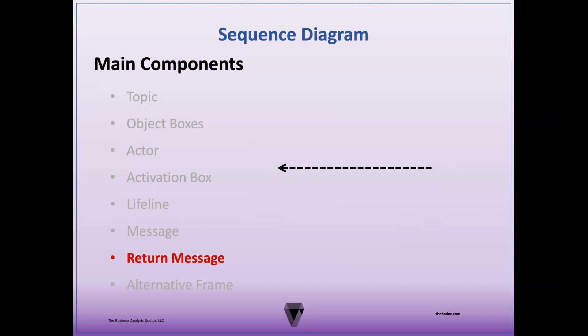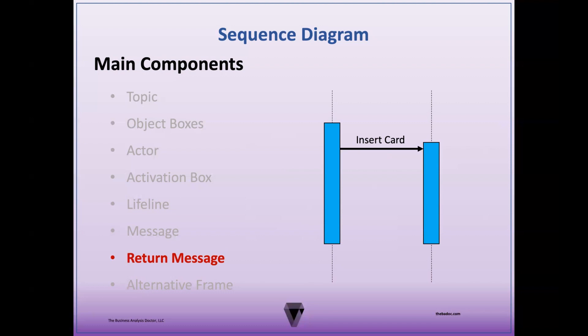A return message is a reply or information sent from the receiving object back to the original sending object. They're illustrated with a dashed line, most often moving from right to left, with a stick arrowhead instead of a filled arrowhead. Return messages are an optional part of the sequence diagram depending on the level of abstraction. They're useful if more detail is required; otherwise, the regular invocation message is fine. Return messages are labeled to describe the information being requested or returned — for example, a PIN request to the user once the card is entered in the ATM.